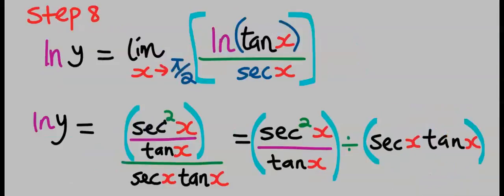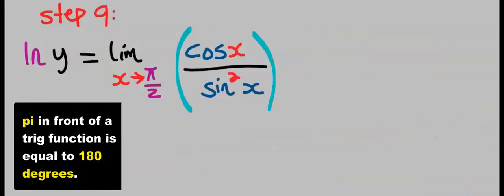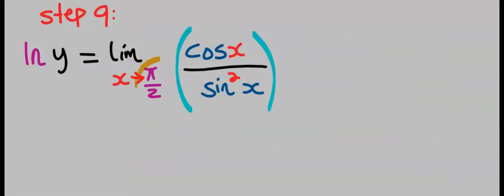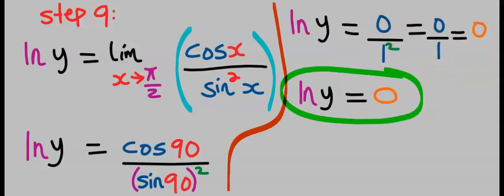Now that we have simplified step 8, next, in step 9, we're going to take the limit of this function. That is, the simplified function. Hence, we're going to take the limit of this function. That is, wherever we see x, we are going to input π/2. π/2 is equal to 90 degrees, which is 180 divided by 2, which is 90. Cos 90 is 0 and sin 90 is 1. Hence, the natural log of y becomes 0.